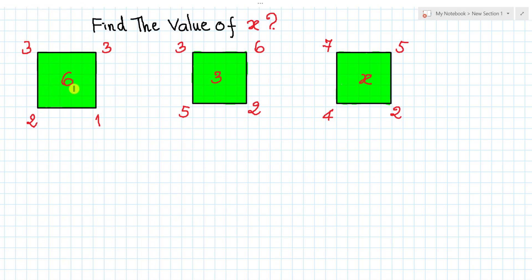Let me see, okay, we see three books. This book has the numbers 3, 3, 2, 1, and 6. And this book has 3, 6, 3, 5, 2. And this book has 7, 5, 4, 2, and 8. So what are the values of 8 to fill in this book?